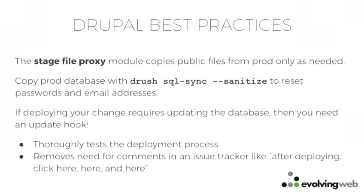To sync the database, you should have some convenient command — a drush alias or something — to bring in the latest nightly snapshot of your production database. If you use sql-sync with sanitize, it'll wipe out passwords and email addresses so you never spam anyone from your staging environment. You also need update hooks to allow you to test your deployment process, not just the code but the way to update the database. Has anyone seen a ticket that said 'after you deploy this, click here, click here, click the other thing, jump up and down'? I've seen too many of those. Don't write those tickets — you'll never get them all right on a consistent basis.